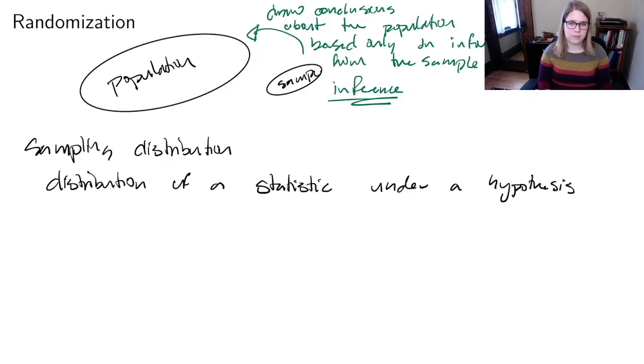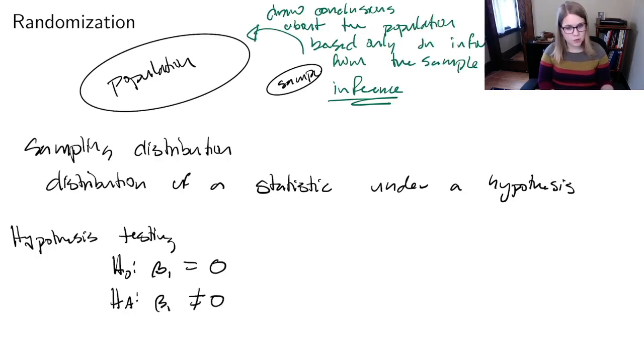Oftentimes we would be doing hypothesis testing, and in this case our hypotheses are almost always our null is that beta one is equal to zero and our alternative is that it is not equal to zero. So we want to know what would beta one look like if the null were true.